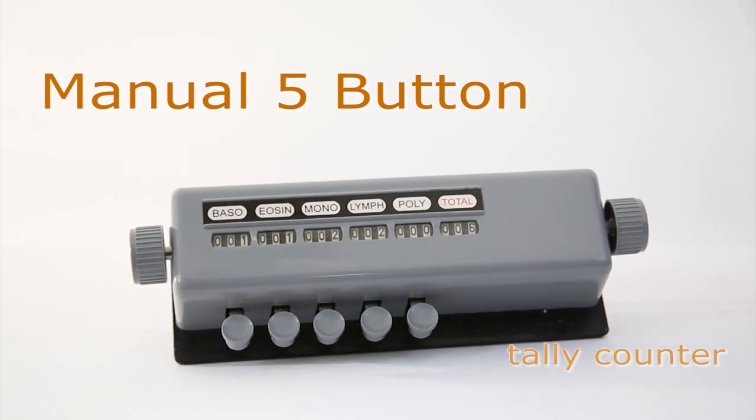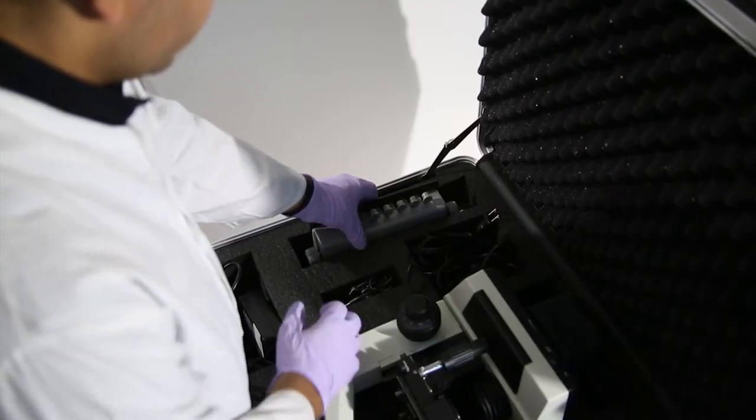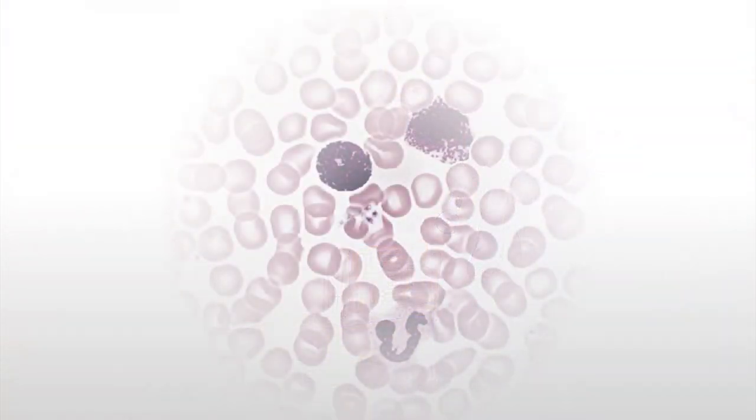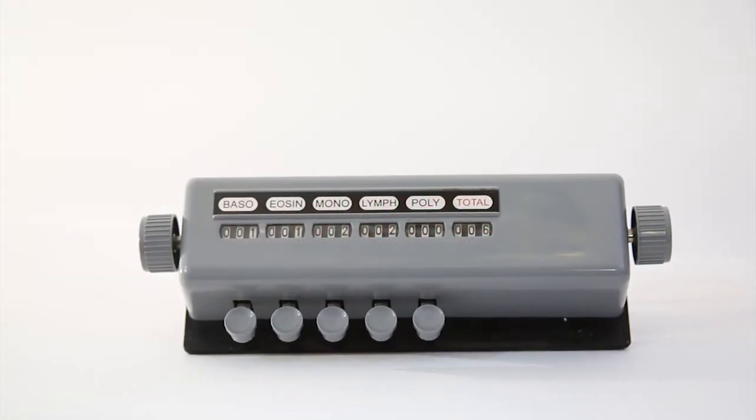Manual 5 Button Tally Counter. The counter is used to differentiate blood cells and record leukocyte quantities as they are identified within hematology. Blood samples examined under a microscope accumulates a subtotal for each type of cell encountered.